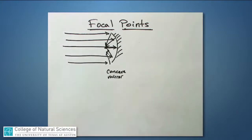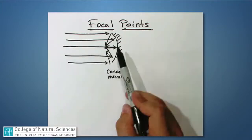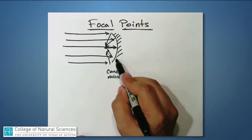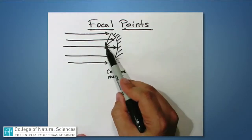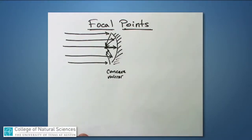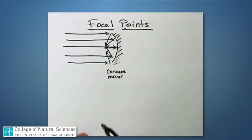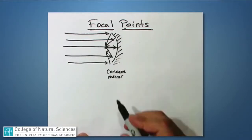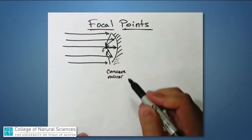In other words, if I had sunlight coming in from the left and this was my curved mirror right here, then if I had a little leaf or something there, I could make it catch fire because all that sunlight would focus to that one point. That's called the focal point, F, of that mirror.